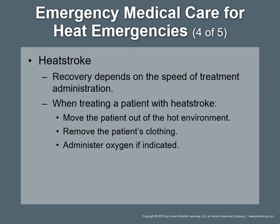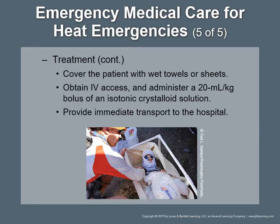Heat stroke: recovery depends on the speed with which treatment is administered. Move the patient out of the hot environment and into the ambulance with air conditioning at maximum cooling. Remove the patient's clothing and administer oxygen if indicated. Cover the patient with wet towels or sheets, or spray with cool water and fan to quickly evaporate moisture. Obtain IV access and administer a 20 mL/kg bolus of an isotonic crystalloid solution, repeating as needed. Provide immediate transport and notify the hospital as soon as possible so staff can prepare to treat the patient on arrival.